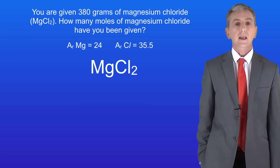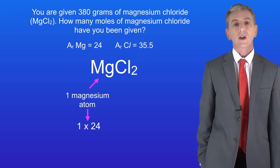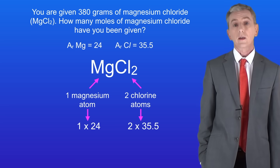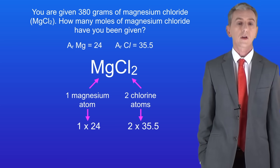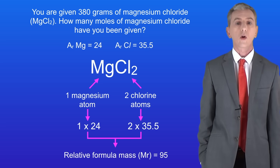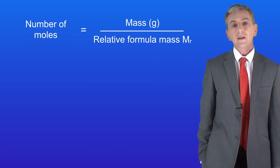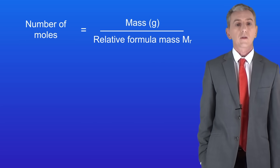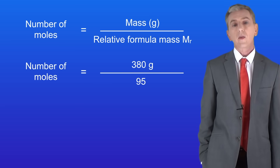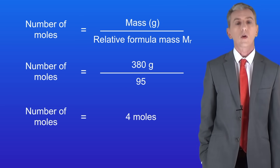First we need to calculate the relative formula mass for magnesium chloride. We've got one atom of magnesium with a relative atomic mass of 24, and two atoms of chlorine with a relative atomic mass of 35.5 each. Adding all of these together gives us a relative formula mass of 95. Dividing 380 grams by the relative formula mass of 95 means that we have 4 moles of magnesium chloride.